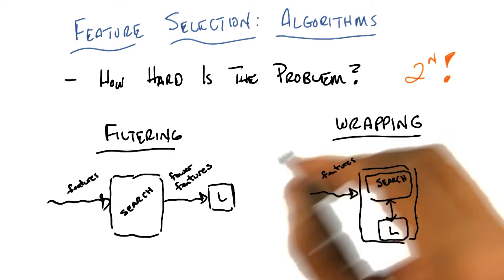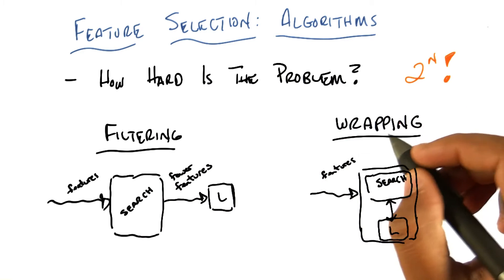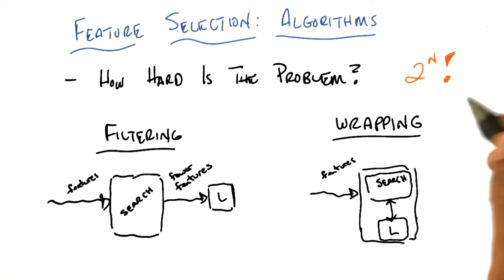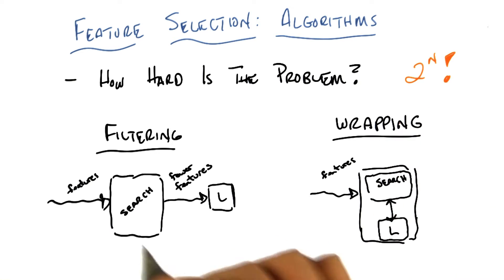Broadly speaking, the first is called filtering, and the second is called wrapping. With a W, not an R. Well, it has an R too, but it starts with a W. And they actually look pretty similar. So I drew these little cartoons, which I hope would make it easier for you to see.